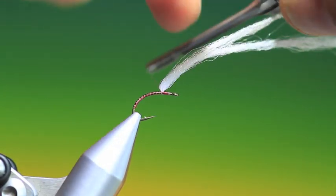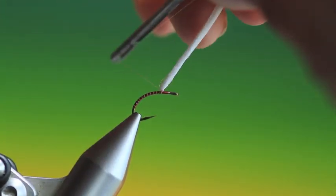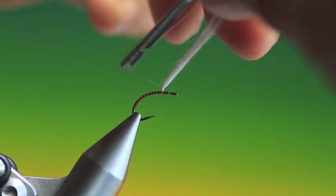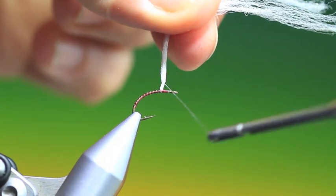And we want to just build up a little bit of post at the bottom so we have something solid to put the parachute hackle on. We just don't want to go up too far, that'll do us fine.